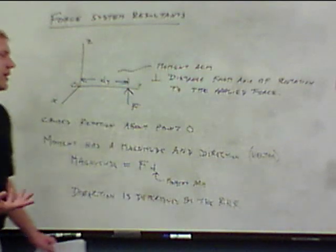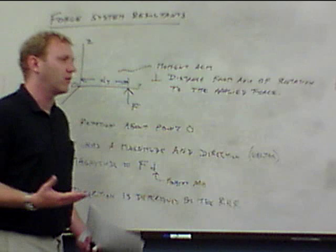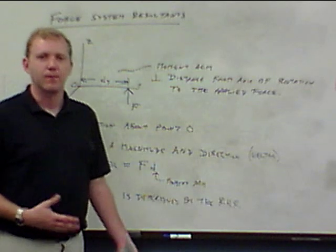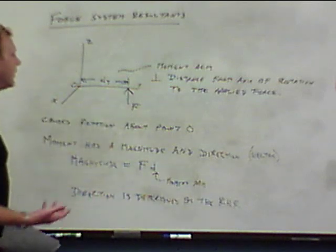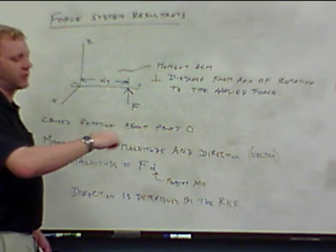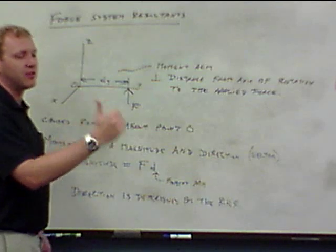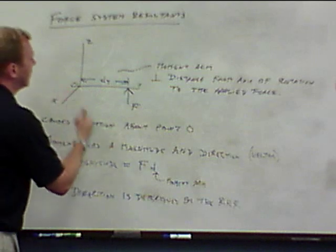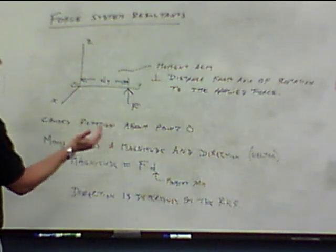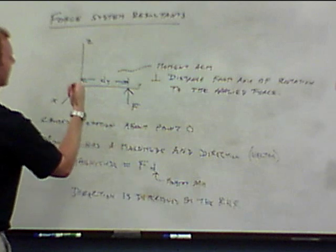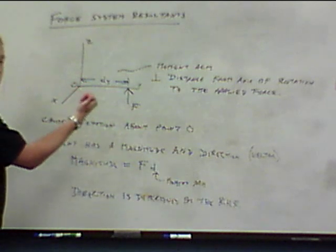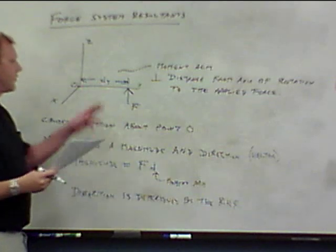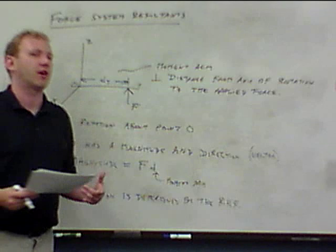The direction is determined by the right-hand rule. There are several variations depending on context — they all work, and it's all essentially dealing with cross products. The moment is a cross product. In this case, it's generally easiest to curl your fingers in the direction of rotation. This force would cause this thing to rotate counterclockwise, so my thumb points straight out of the board — this moment, this force, is causing a moment in the positive x direction.